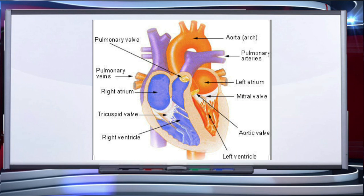The heart is a four-chambered, pear-shaped muscular structure situated in the thoracic cavity between the two lungs, slightly tilted to the left. It has the size of a fist. It is protected by a double-walled membranous bag called the pericardium, which encloses the pericardial fluid.